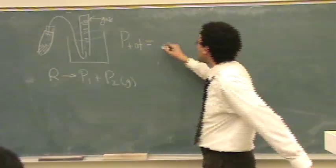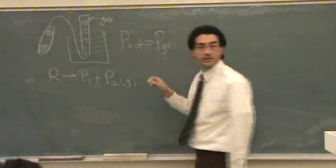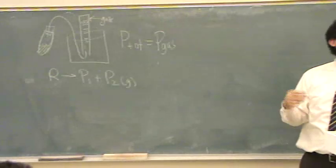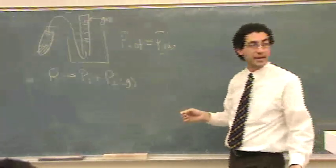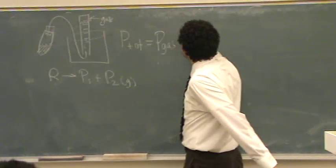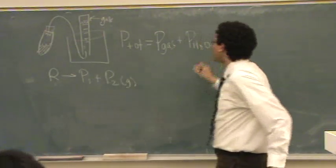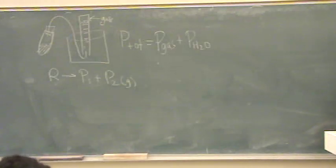Total pressure is going to be the pressure of the gas. This is going to be some partial pressure of gas. There will also be another gas in there, though. Always will have water. Because it's bubbling through the water, so there will be some vapor pressure of water.